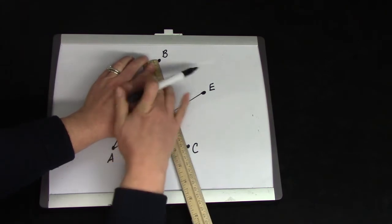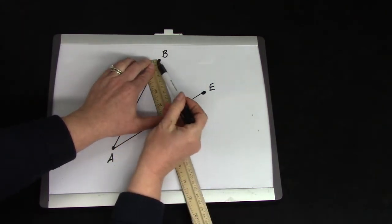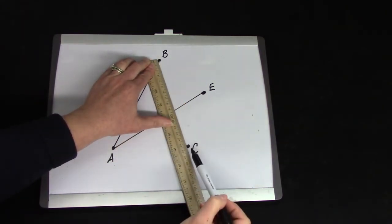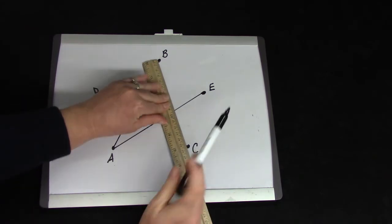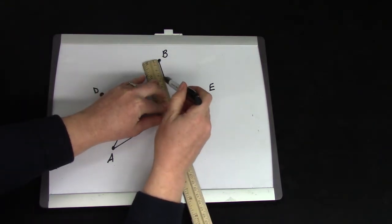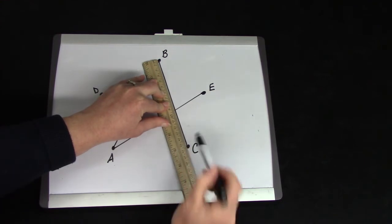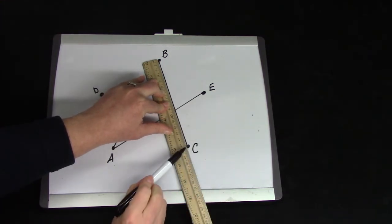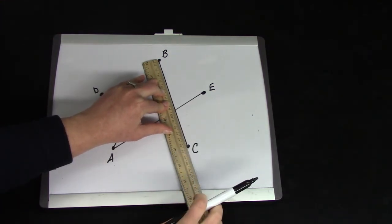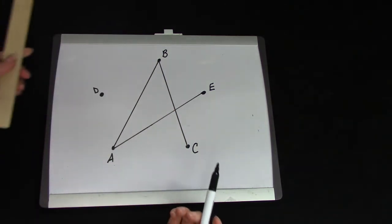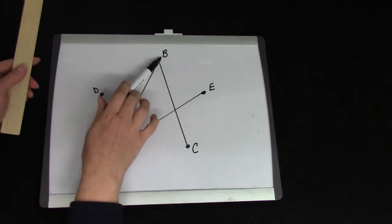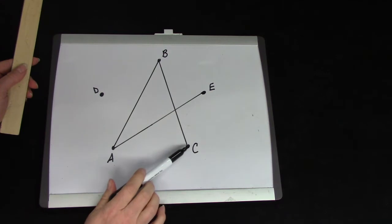Now I've lined my ruler up between the dots B and C. I'm going to hold my ruler tightly so that it doesn't move and I don't get a wiggly line. I'm going to stop right at the C dot. Now I've drawn a line segment. The line could be called B, C.